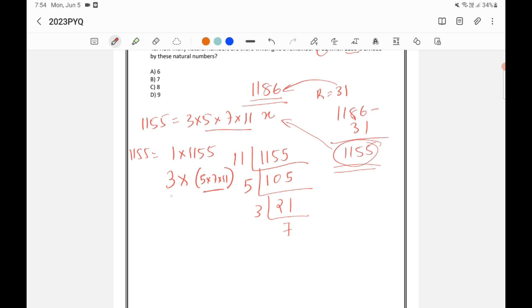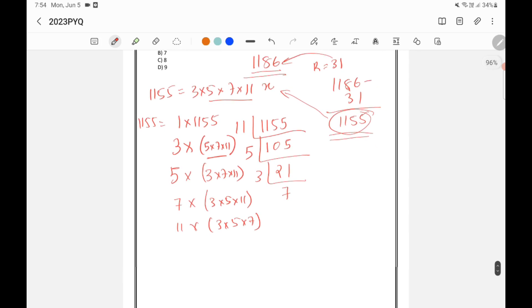We can also write it as 5 into 3 into 7 into 11. We can also write 1155 as 7 into 3 into 5 into 11, or we can write it as 11 into 3 into 5 into 7. So these are different numbers, these are different factors.